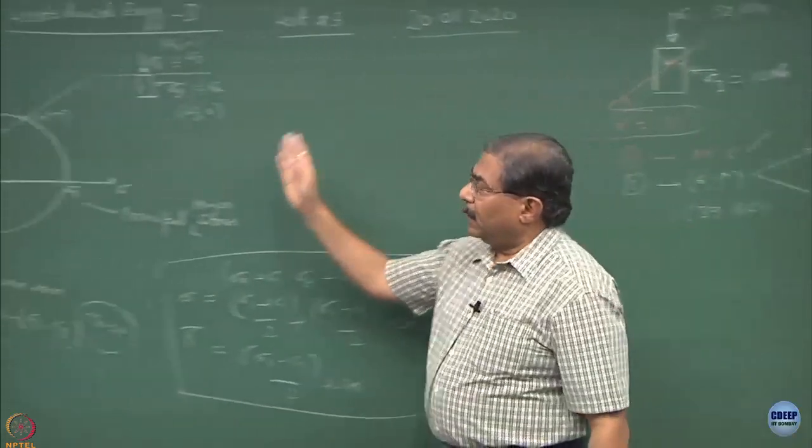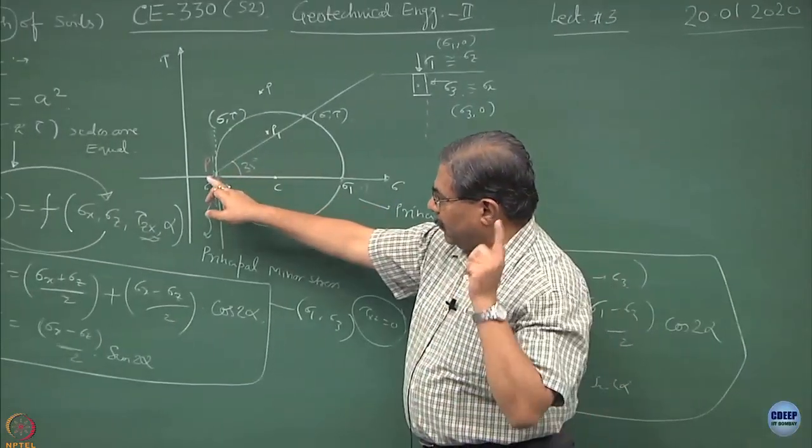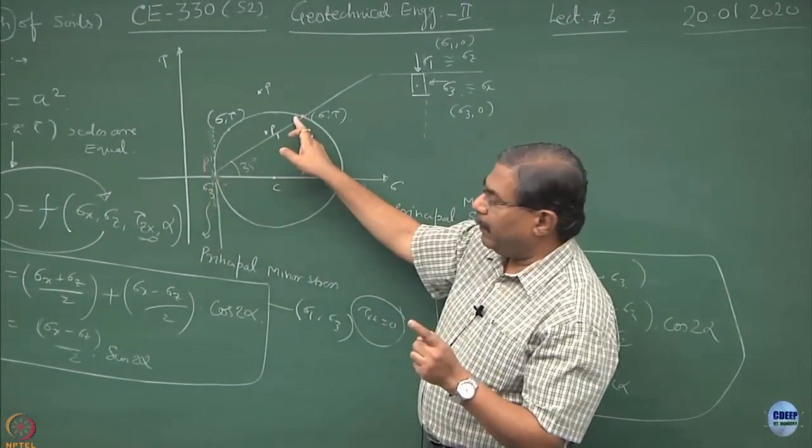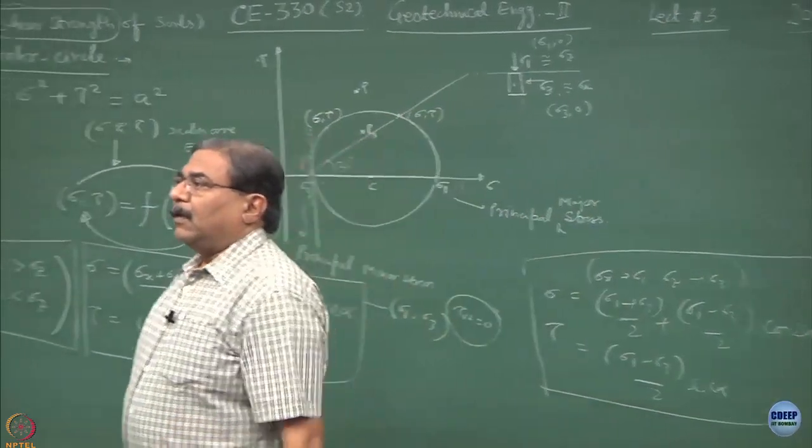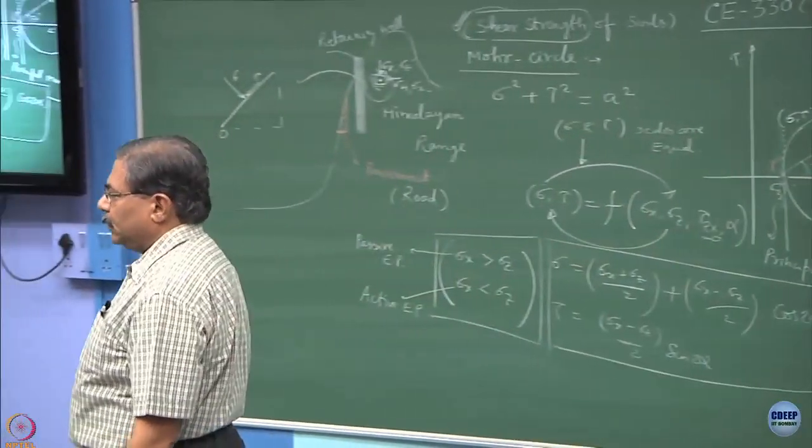So by definition, the state of stress has given me pole and pole is giving me a plane which is cutting the Mohr circle where the state of stress is to be identified. Is this part clear?